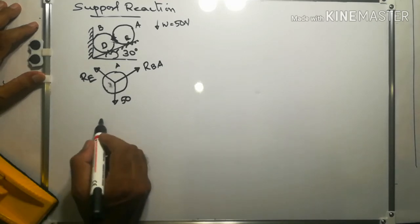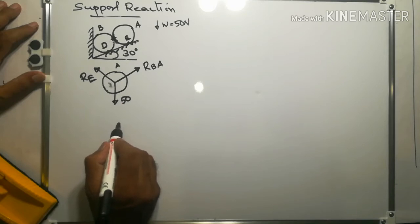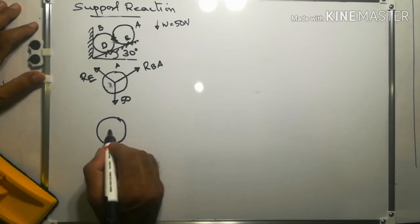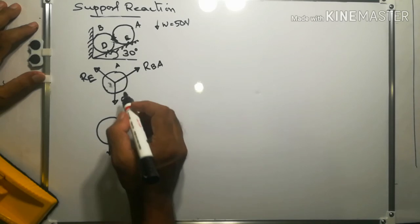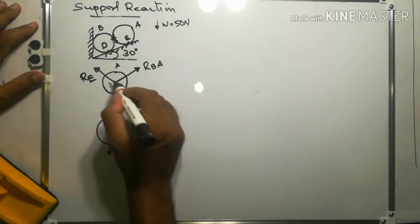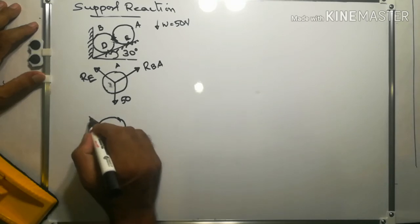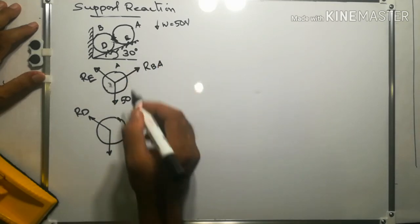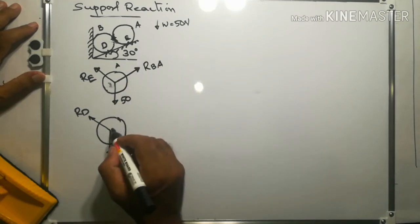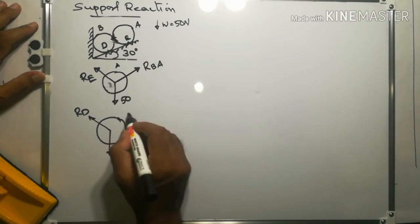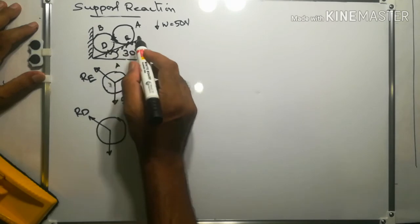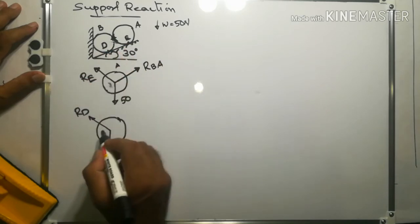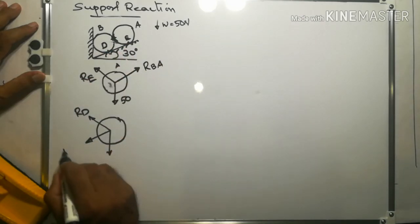On the other hand, how many forces are acting on ball B? Ball B has its weight acting vertically downwards. There is also RD, the reaction from the same inclined plane supporting both balls. From ball A, a reaction force RAB will be exerted on ball B.